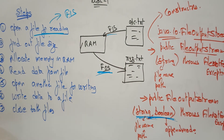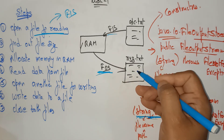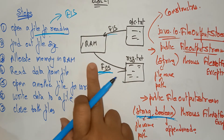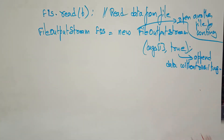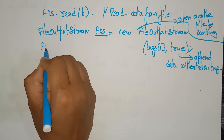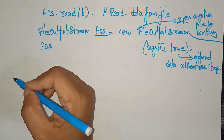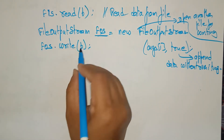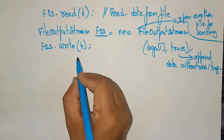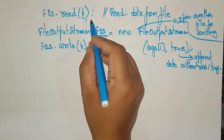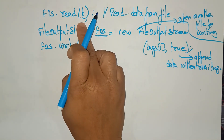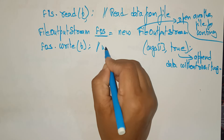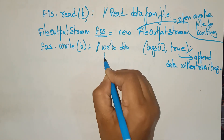Now that the file is open for writing, we write the data to the file. Our task is to copy abc.txt into xyz. After opening the file for writing, write the data using: fos.write(b); — whatever data is in the byte array b, which holds the file contents in RAM, is written to the output file.